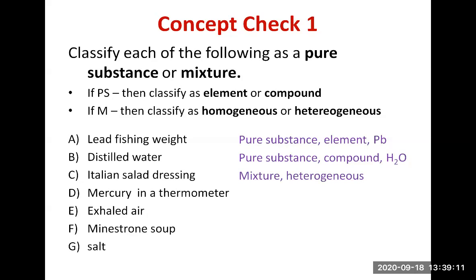Mercury in a thermometer — mercury is found in the periodic table; it's the only metal that is a liquid at room temperature. So mercury is an element, which means it's a pure substance. Its symbol is Hg.